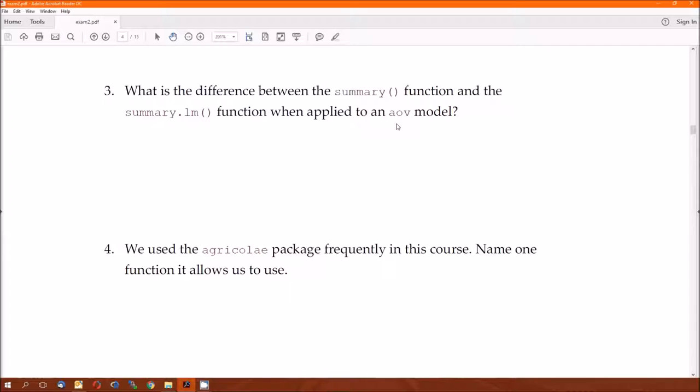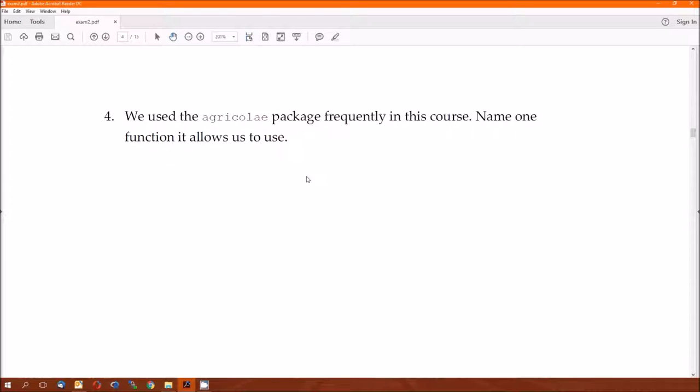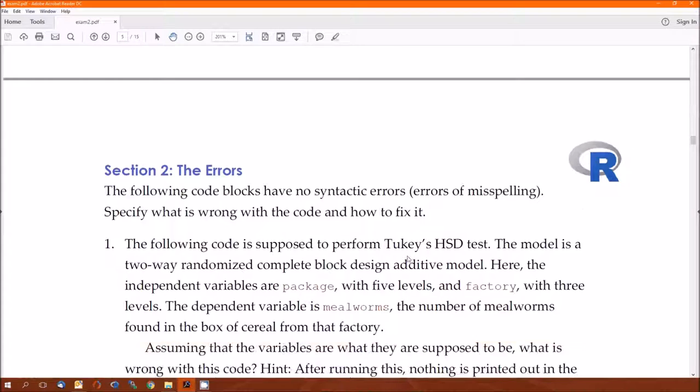If you applied it to an lm model, then Summary is going to give you those effects. Summary.lm is still going to give you the estimated effects. But Summary.aov will give you the analysis of variance table. Four: we use the agricolae package frequently in the course. Name one function it allows us to use. Hsd.test is one. That's the one I think almost everybody got.